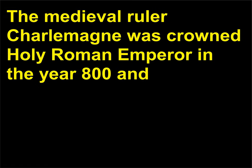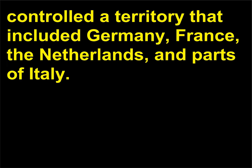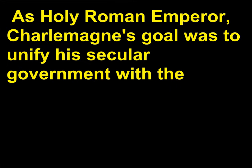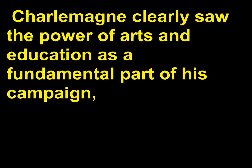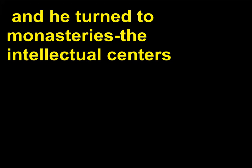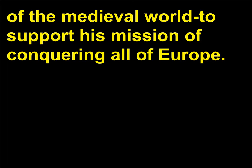The medieval ruler Charlemagne was crowned Holy Roman Emperor in the year 800 and controlled a territory that included Germany, France, the Netherlands, and parts of Italy. As Holy Roman Emperor, Charlemagne's goal was to unify his secular government with the Christian Church and to restore the Western Roman Empire as a Christian kingdom. Charlemagne clearly saw the power of arts and education as a fundamental part of his campaign, and he turned to monasteries — the intellectual centers of the medieval world — to support his mission.